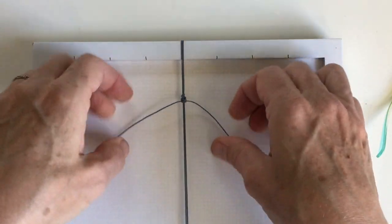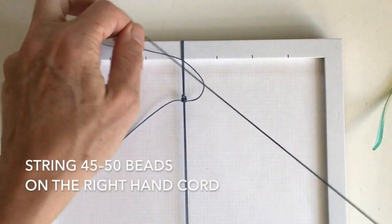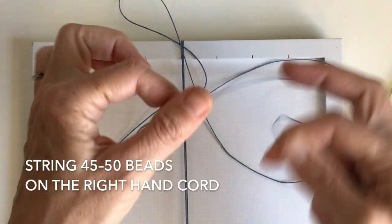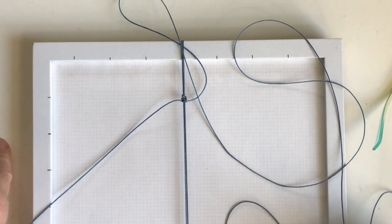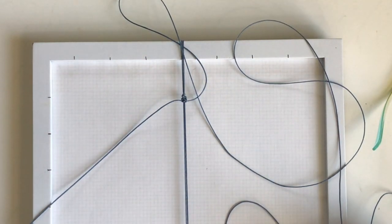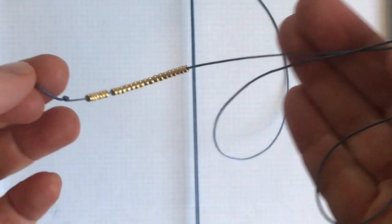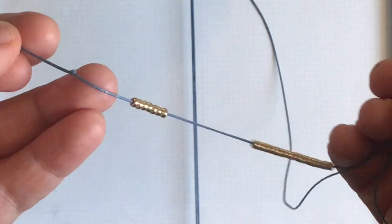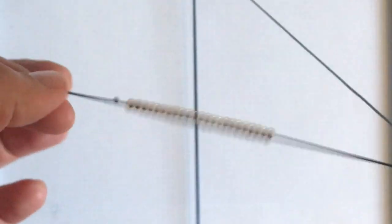And then next you want to thread all of your beads onto this right hand cord. So probably about somewhere between 45 to 50 beads. Okay so I've threaded 48 beads onto the right hand thread. And then I just did a simple knot at the end so they won't slide off.